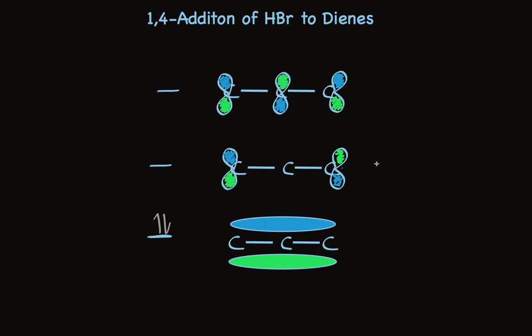And of course we also notice that this allylic pi system is more stable because the two electrons in it are both in a highly stabilized bonding MO. So either picture, the MO picture or the resonance picture, gives us the same conclusion. The reaction will be at both ends of the 3-carbon allylic pi system.